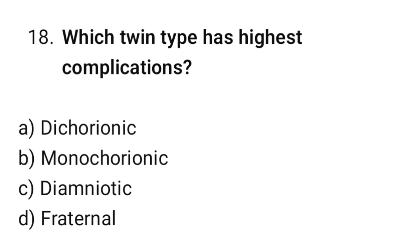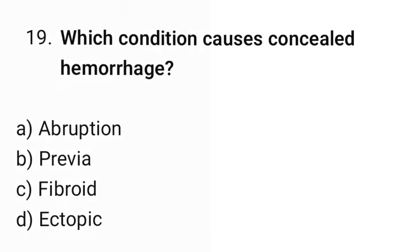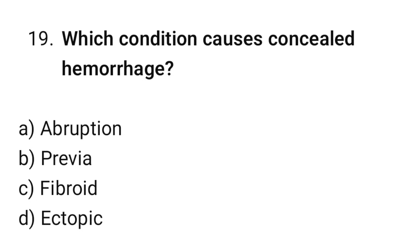Question number 18: Which twin type has highest complications? The correct option is B: Monochorionic.